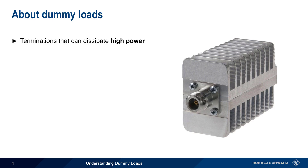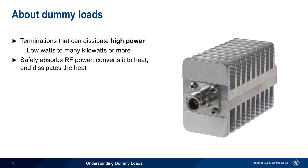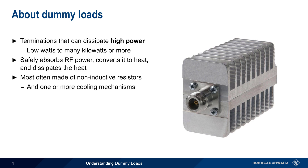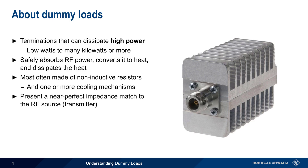Dummy loads are terminations which can safely dissipate powers on the order of low watts to many kilowatts or more. They do this by converting incoming RF power into heat and then dissipating that heat. Heat is absorbed most often by means of non-inductive resistors and is dissipated by means of one or more cooling mechanisms, which we'll cover in more detail later. Like other RF terminations, dummy loads also present a near-perfect impedance match to the RF source or transmitter, meaning that ideally they reflect little to none of the incoming power.